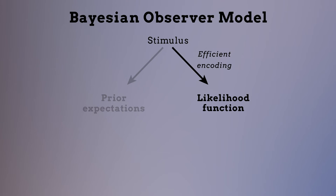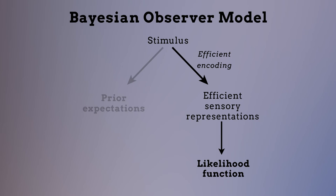On one hand, efficient encoding requires that sensory representations are efficient, or, in other words, that they are optimally adapted to the characteristics of natural stimuli.